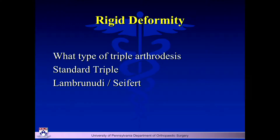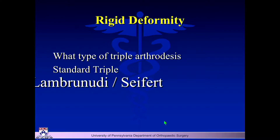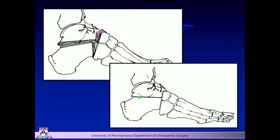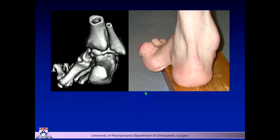If the foot is rigid, it becomes more difficult depending on how fixed and severe the deformity is. Sometimes you can just loosen up the joints and do a standard triple arthrodesis if there's not much bony deformity. But in some neuromuscular diseases that started in childhood, there can be associated severe bony deformity, and you have to think about a Lambrinudi or a Siffert procedure — cutting wedges out through the subtalar, calcaneal-cuboid, and talonavicular joints to gain correction.